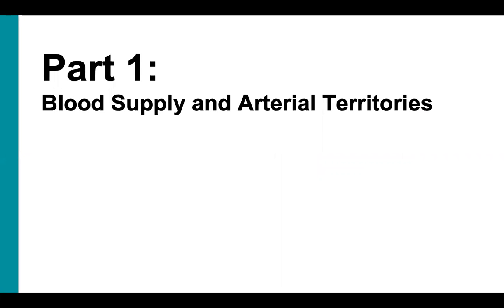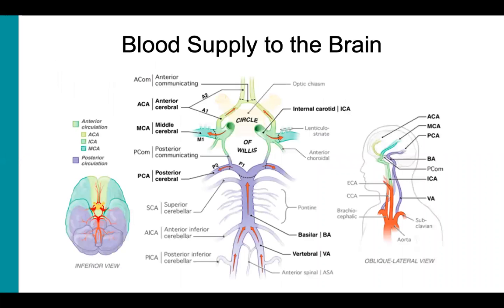Blood supply and arterial territories. The brain is an insatiable consumer of oxygen. Although it makes up only 2% of an adult's total body weight, it receives 15 to 17% of total cardiac output and consumes 20% of the oxygen used by the entire body. An ongoing flow of oxygenated blood is essential for continued brain function. The average person will lose consciousness if the brain is deprived of blood for 10 to 12 seconds, and after 3 to 5 minutes, irreparable brain damage or death may result.